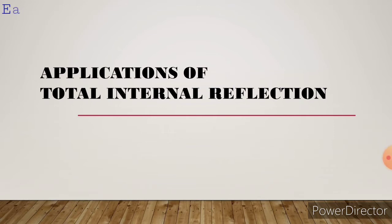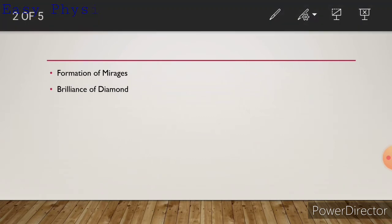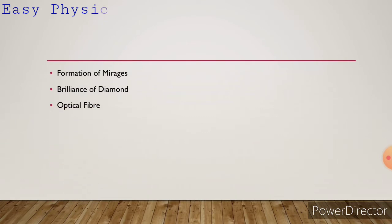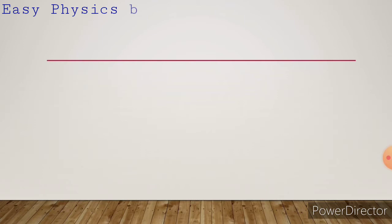In this class we are going to discuss one of the important topics: applications of total internal reflection. Here are a few examples of total internal reflection that we observe in our daily life — formation of mirage, brilliance of diamond, and optical fibers. Let us discuss them one by one.